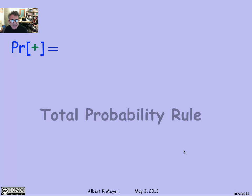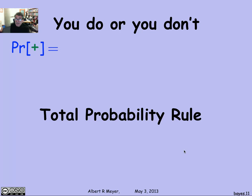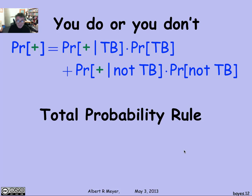What is the probability that the test comes in positive? How are we going to calculate that? That's the key unknown here. We're going to use the total probability rule. Total probability says you either do or don't have TB, so the probability that the test comes in positive equals the probability it comes in positive if you do have TB times the probability you have TB, plus the probability it comes in positive given that you don't have TB times the probability you don't have TB.